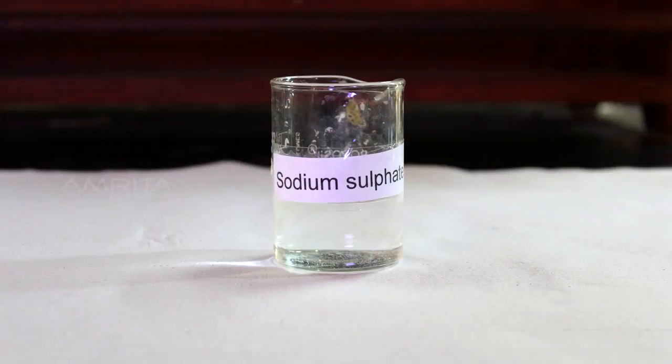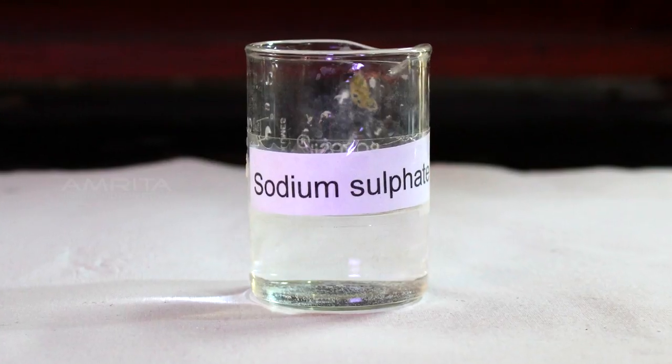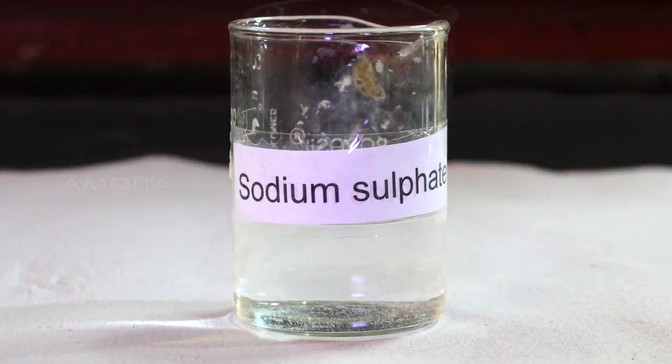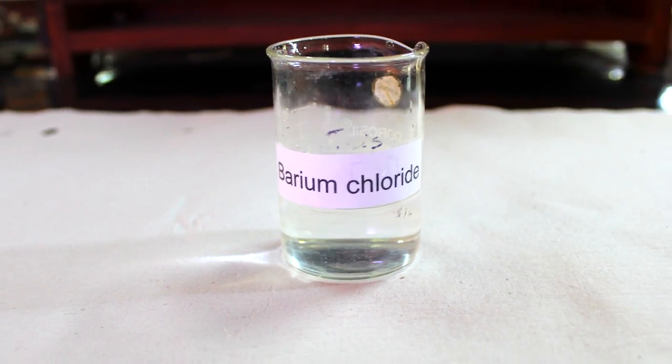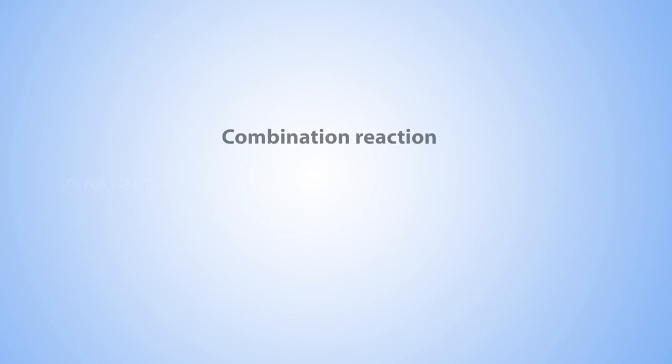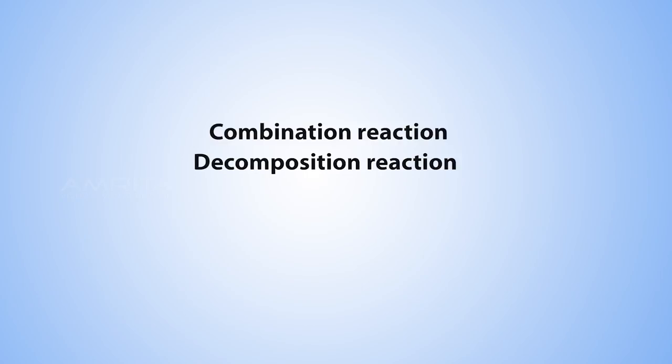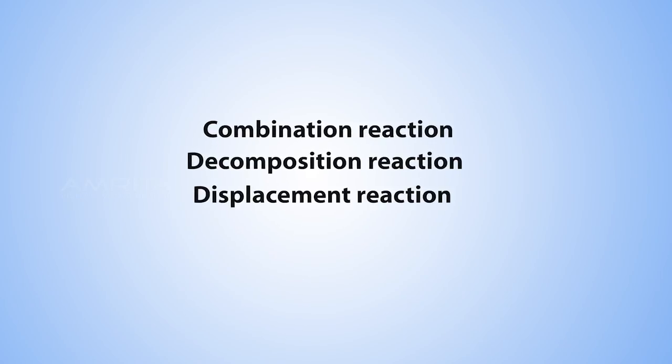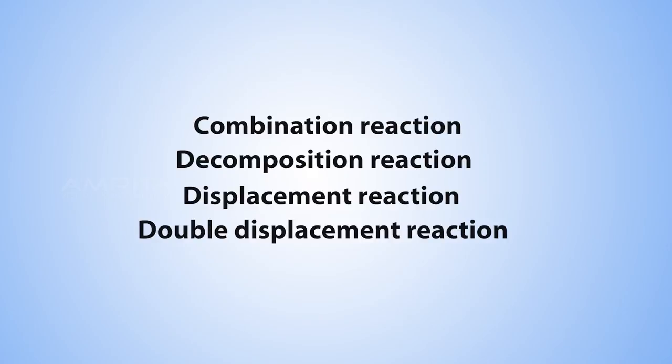The aim of this experiment is to study the reaction between sodium sulphate and barium chloride solutions and classify it as a combination reaction, decomposition reaction, displacement reaction, or double displacement reaction.